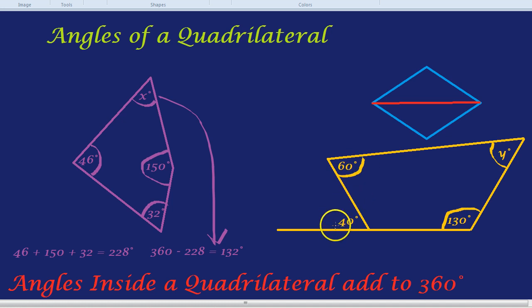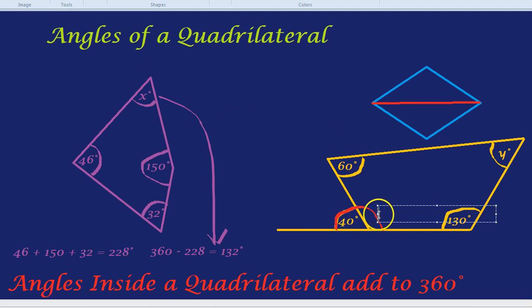You might be wondering, I've only given you two of the angles inside the quadrilateral. How on earth do I find Y? What we're going to need to do is use our knowledge about the angles in a straight line. The angles on a straight line add up to 180. So if that angle on the outside is 40, what would you say the angle on the inside is? It would have to be 140 degrees.